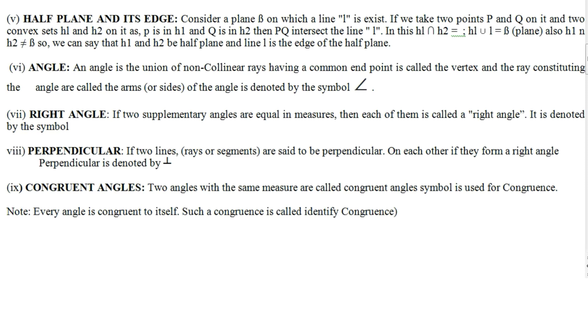In this, H1 intersect H2 is empty, and H1 union l union H2 equals B, where B is our plane. Also H1 and H2 are not equal to B. So we can say that H1 and H2 are half planes and line l is the edge of the half plane.